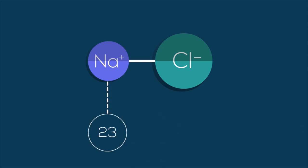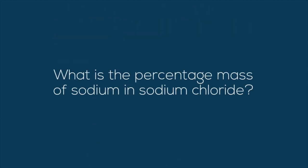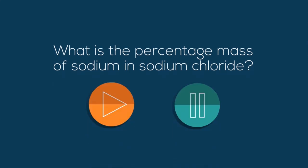Sodium has a molecular mass of 23, and chlorine a molecular mass of 35.5. You already know how to calculate percentage mass, so let's see if you can figure out the percentage mass of sodium in sodium chloride. Pause the video and resume when you've worked it out.